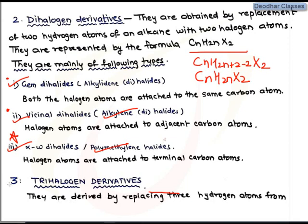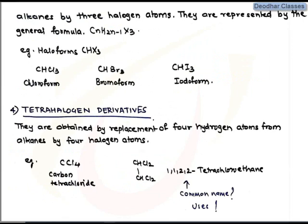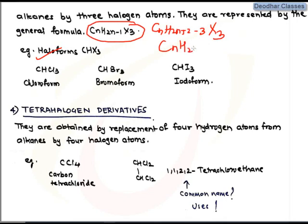The next category is trihalogen derivatives. When three hydrogen atoms of an alkane are replaced with three halogen atoms, we get trihalogen derivatives. The most common examples are haloforms. The general molecular formula is CnH2n−1X3, derived from CnH2n+2 by removing three hydrogens and adding three halogens. Examples include chloroform, bromoform, and iodoform.